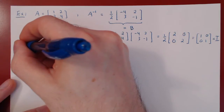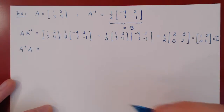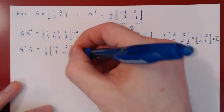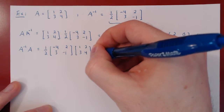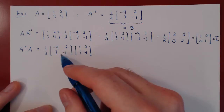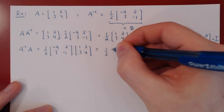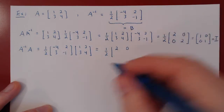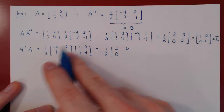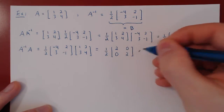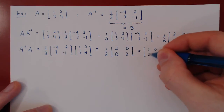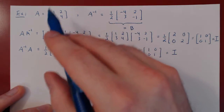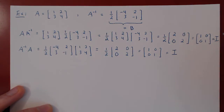Let's check the other direction — that A inverse times A, that B times A also equals I. The scalar multiple of one half is already up front, so we can right away perform the matrix multiplication. First row: -4 + 6 = 2 and -8 + 8 = 0; second row: 3 - 3 = 0 and 6 - 2 = 2. Multiplying every entry by one half gives [1, 0; 0, 1] = I. So this matrix is indeed the inverse, as the product in both directions gives us the 2 by 2 identity matrix.